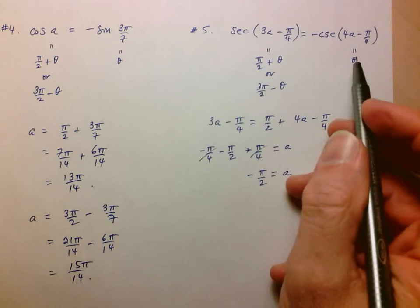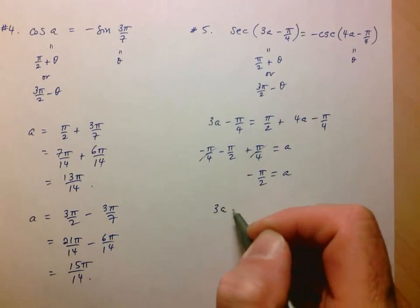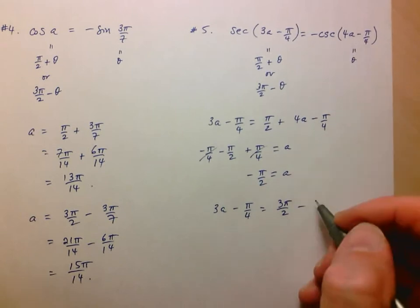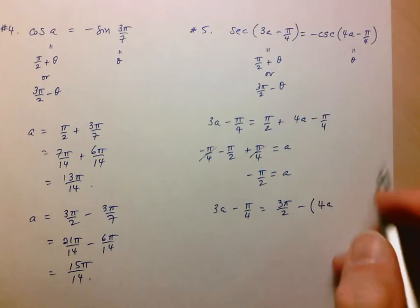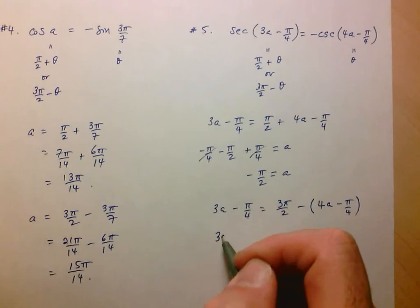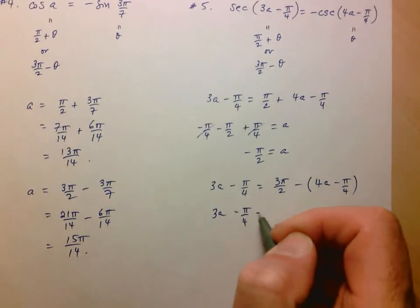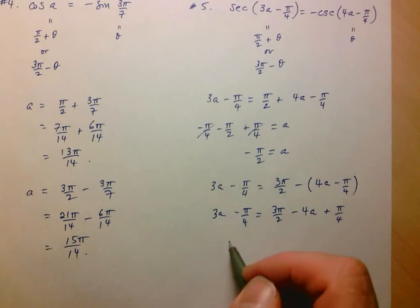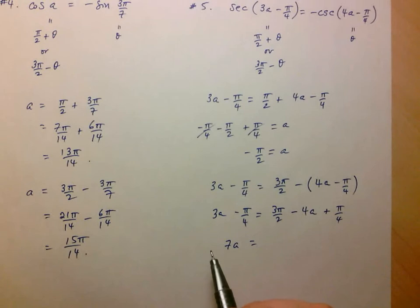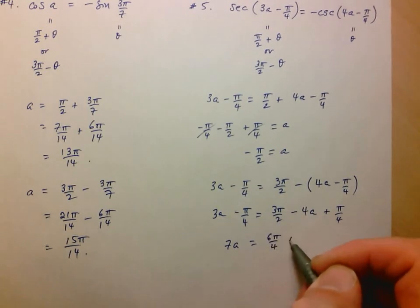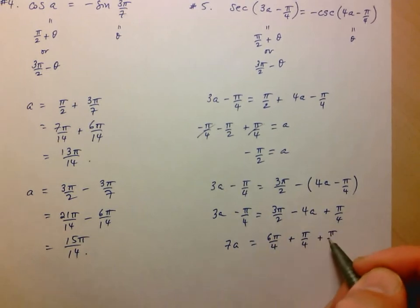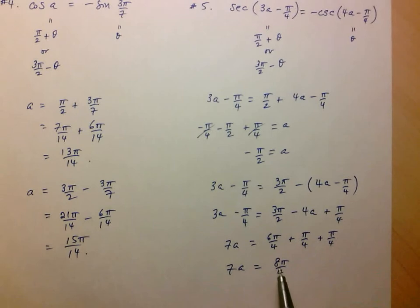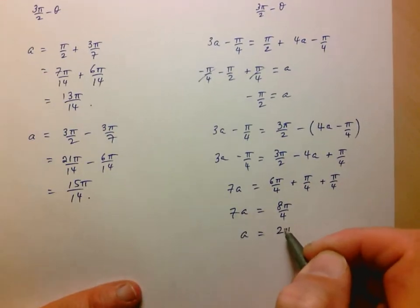And the second one now, I'll use a second relationship. So here, 3a minus π over 4 needs to be equal to 3π over 2 minus my theta, which is this here. Now because I'm doing a subtraction, I better put brackets or else I risk making a silly mistake. So here, 3a minus π over 4 equals 3π over 2 minus 4a plus π over 4. I'll bring that to the other side, so we've got 7a is equal to, well let me put everything over 4. So this is going to be 6π over 4 plus π over 4, and then bring that to the other side plus another π over 4. So 7a is equal to 8π over 4, which is just equal to 2π. And so a is just equal to 2π over 7.